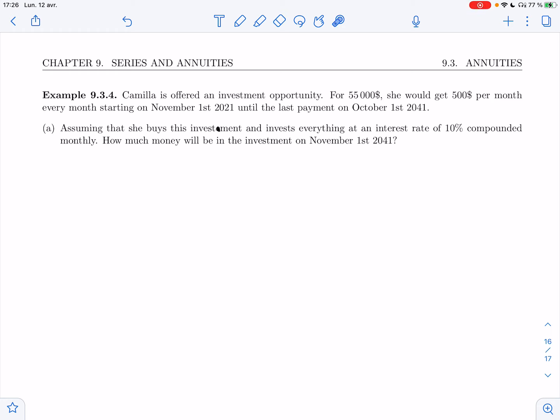All right, let's do another example of annuities. Let's look at example 9.3.4. Camilla is offered an investment opportunity. For $55,000, she would get $500 per month every month starting on November 1st, 2021 until the last payment on October 1st, 2041.